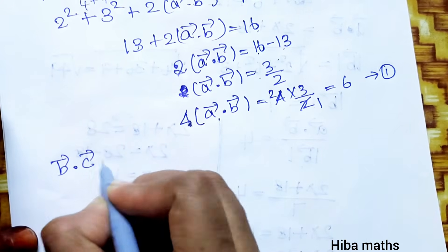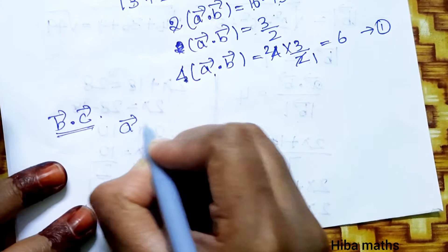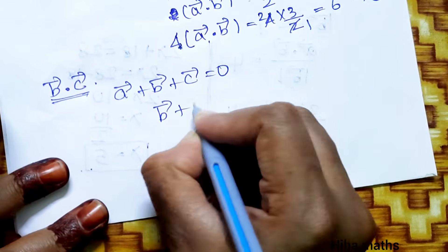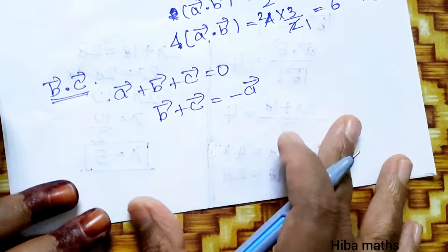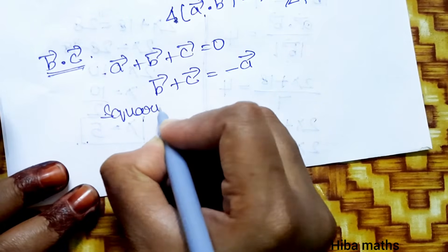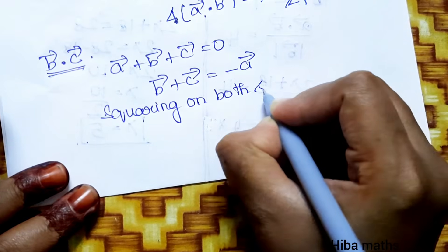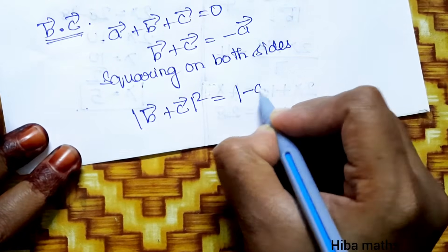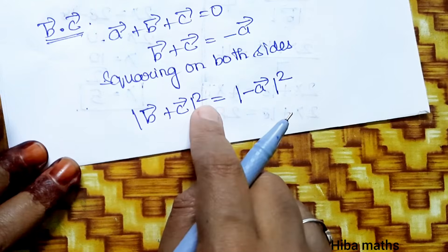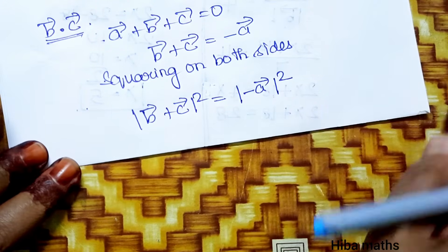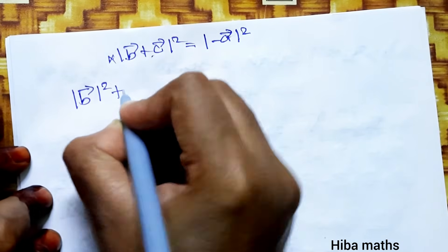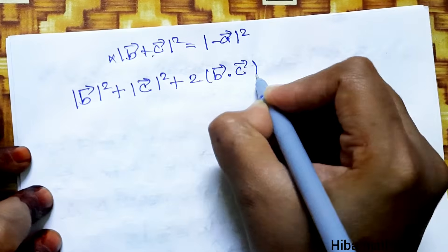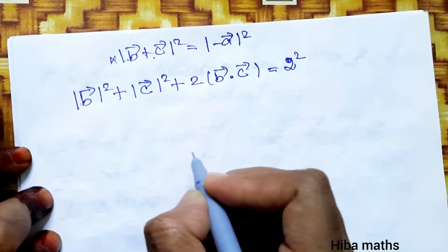Now for b·c: since a + b + c = 0 vector, b vector + c vector = minus a vector. Squaring on both sides: modulus of (b vector + c vector) squared = a vector squared. Expanding: b squared + c squared + 2(b·c) = a squared.